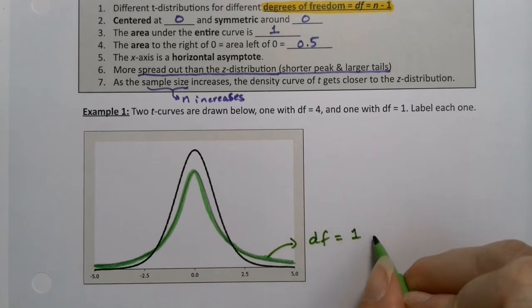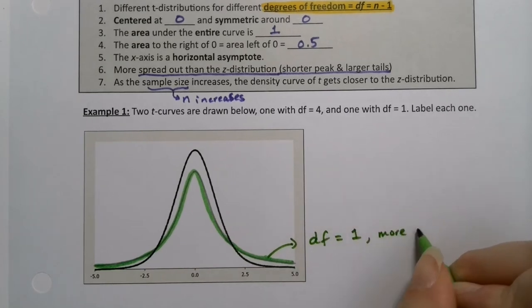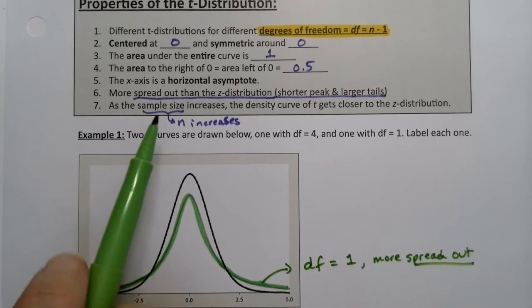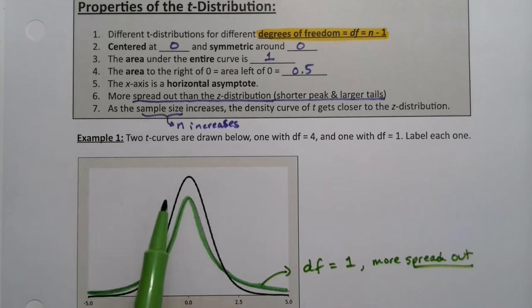How do we tell that? How do we tell how spread out something is? Well remember what it said right here: more spread out because it's got a shorter peak and larger tail.